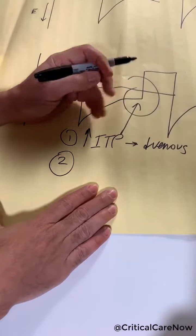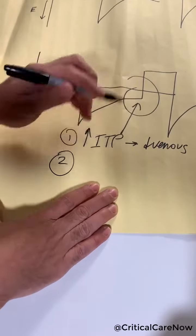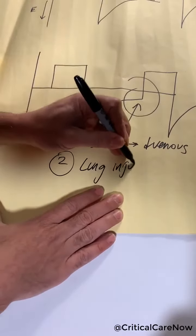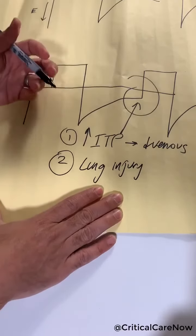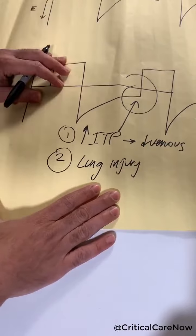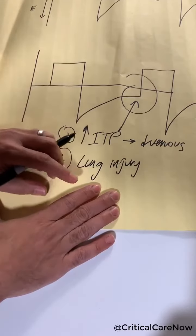The second problem is this causes overinflation of the lung, which can cause lung injury, but what can also cause a decrease in the ability for that person to trigger the breath by something called auto-peeping, which is something we'll talk about next time.